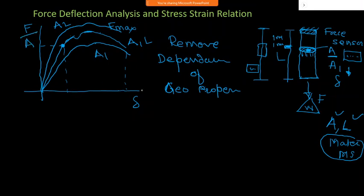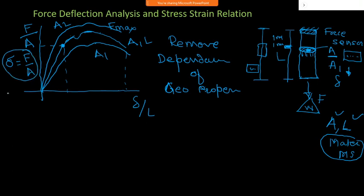By dividing force by area and deflection by length L, we remove these two geometric properties. Force divided by area gives stress, and deflection divided by length gives strain. Stress cannot be directly measured by any instrument - we always measure force and divide by area to get stress.